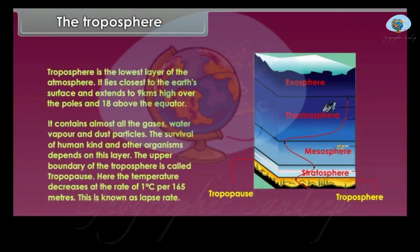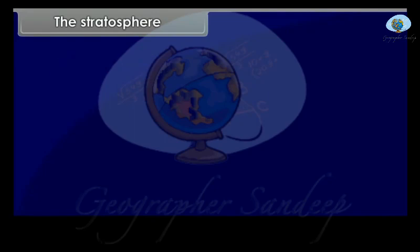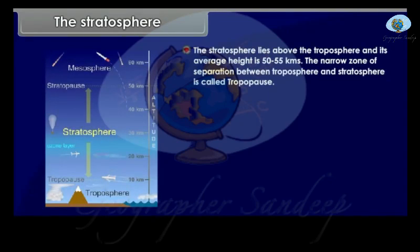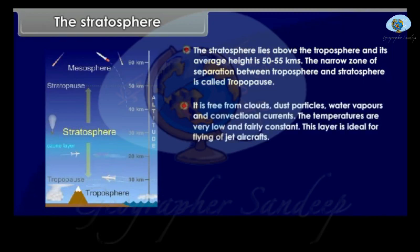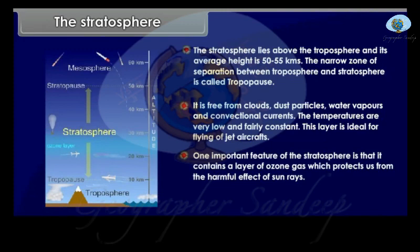The stratosphere lies above the troposphere and its average height is 50 to 55 km. The narrow zone of separation between the troposphere and stratosphere is called the tropopause. The stratosphere is free from clouds, dust particles, water vapours and convectional currents. The temperatures are very low and fairly constant. This layer is ideal for flying jet aircrafts. One important feature of the stratosphere is that it contains a layer of ozone gas which protects us from the harmful effects of sun rays.